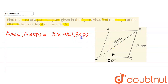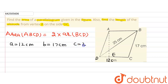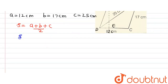Let's find the area of triangle BCD using Heron's formula. The sides are: a = 12 cm, b = 17 cm, and c = 25 cm. The semi-perimeter S = (a + b + c) / 2 = (12 + 17 + 25) / 2 = 54 / 2 = 27 cm.